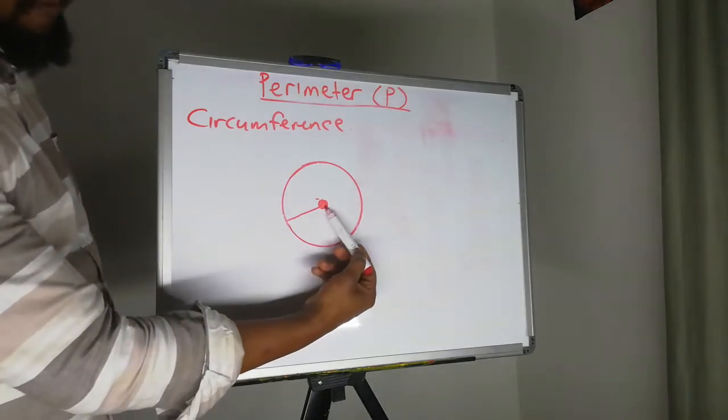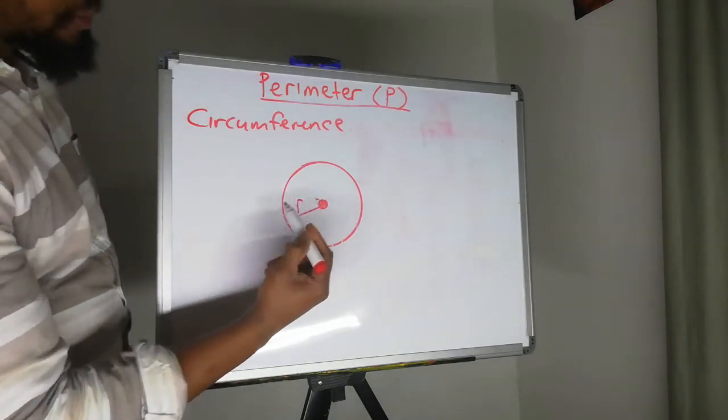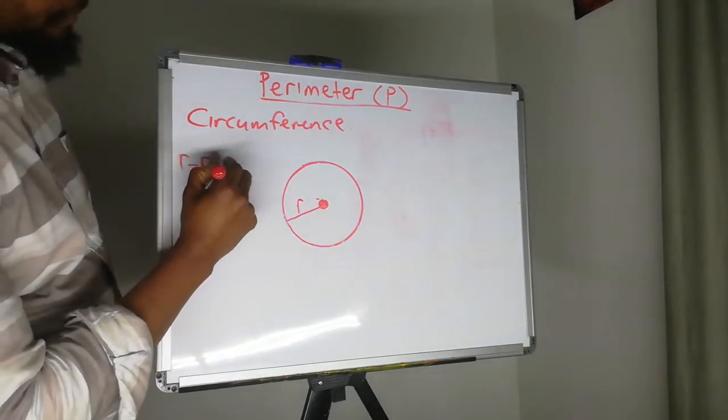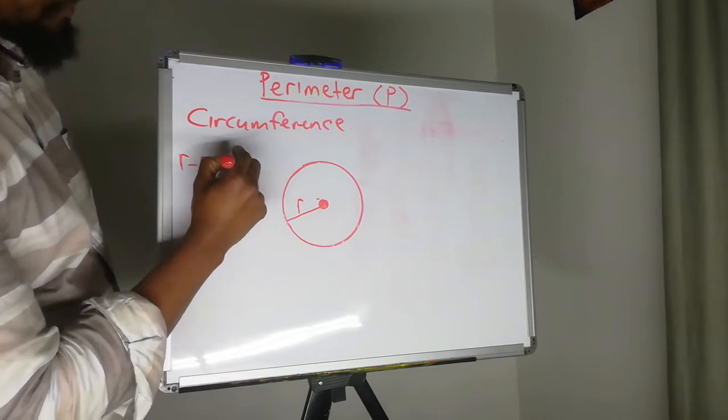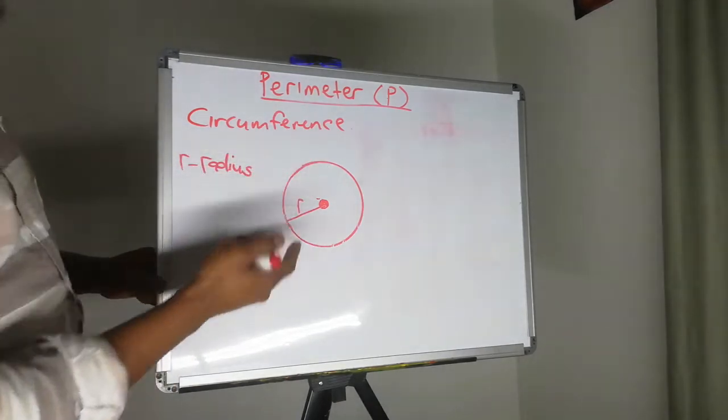And the line that goes from the middle to the outer border is called the radius. So let's say R for radius. So the radius is very important to us because it gives us that distance from the middle point of the circle to the border of the circle.